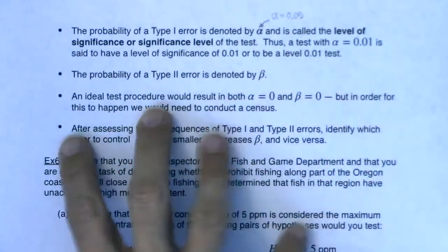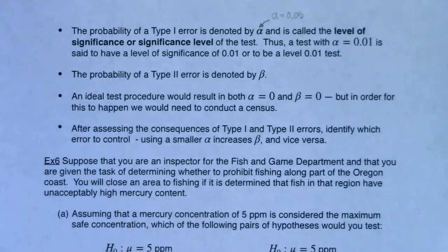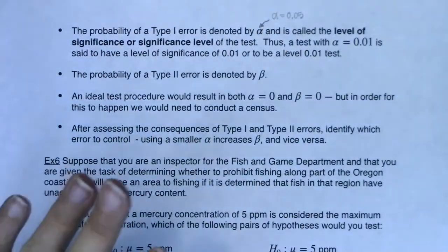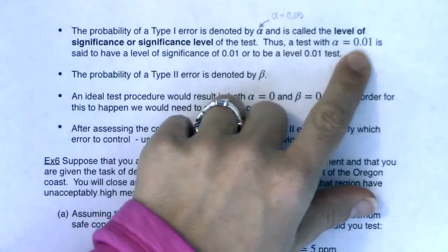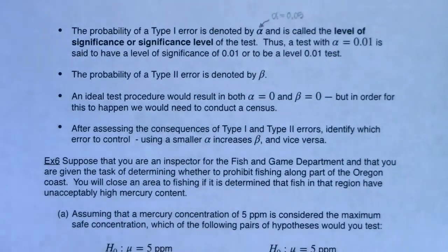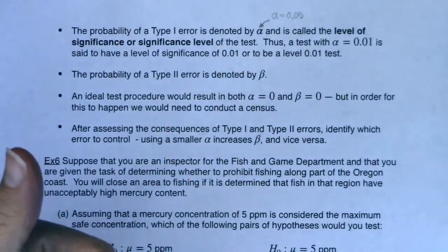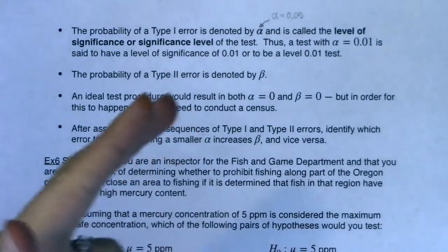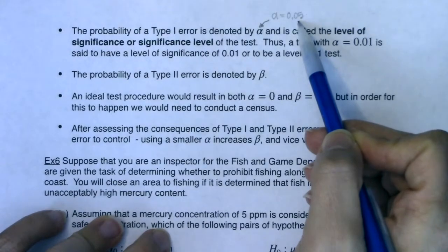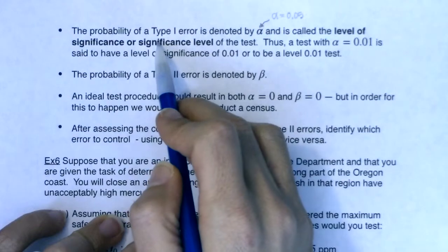You set the alpha level before you ever get going. As a researcher, you set your alpha level. The industry standard is 5%. If a type 1 error is pretty bad, you might lower it to 1%. If it's not so bad, you might raise it. I could call it the alpha level, level of significance, or significance level — it's a probability, a number between 0 and 1, and you want it on the smaller side because it is the probability of making an error.